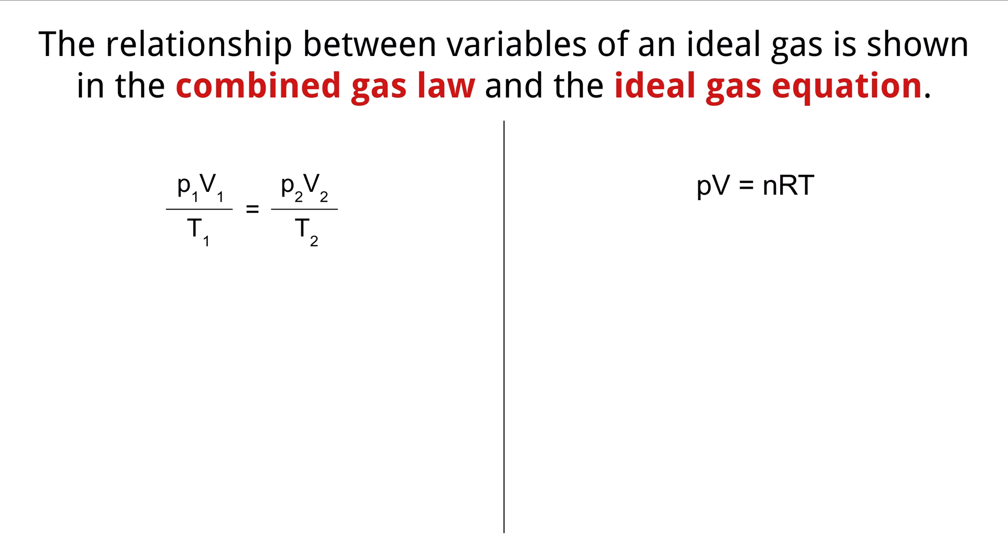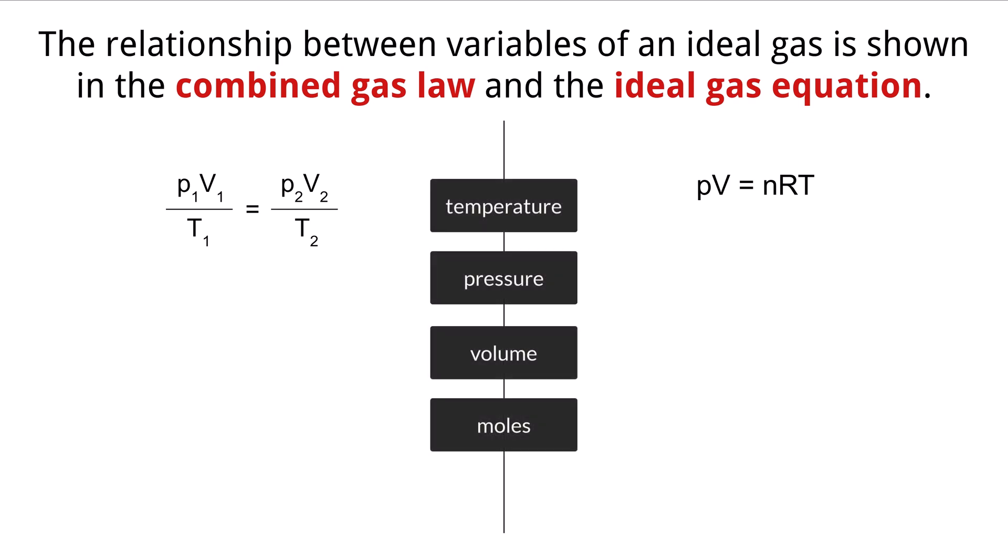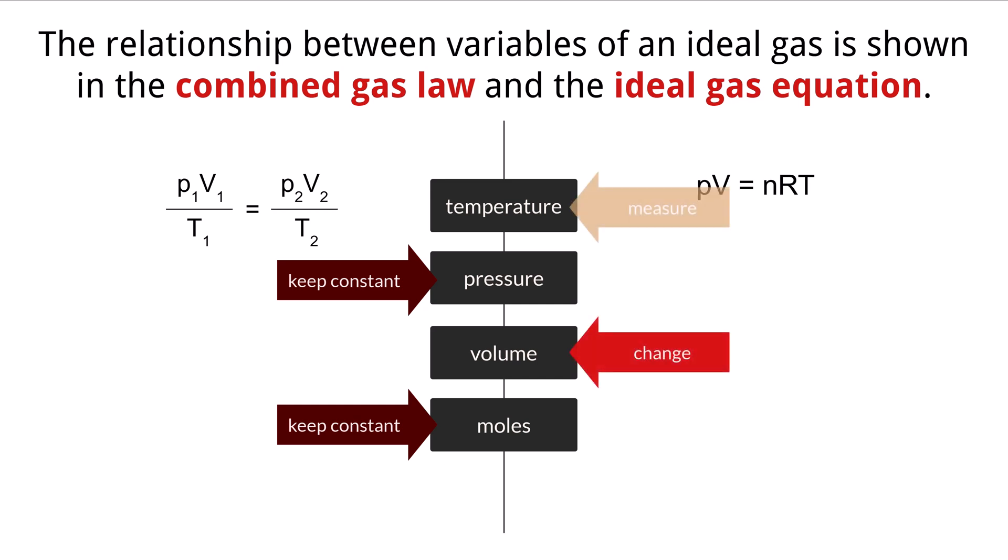As we have seen from the last few slides, there are four different variables taken into account when looking at an ideal gas. Those are temperature, pressure, volume, and moles. Any number of these variables can be studied in terms of how one can impact the other with an ideal gas. All you need to do is keep two of them constant and then change the third variable and observe what happens to the fourth variable.